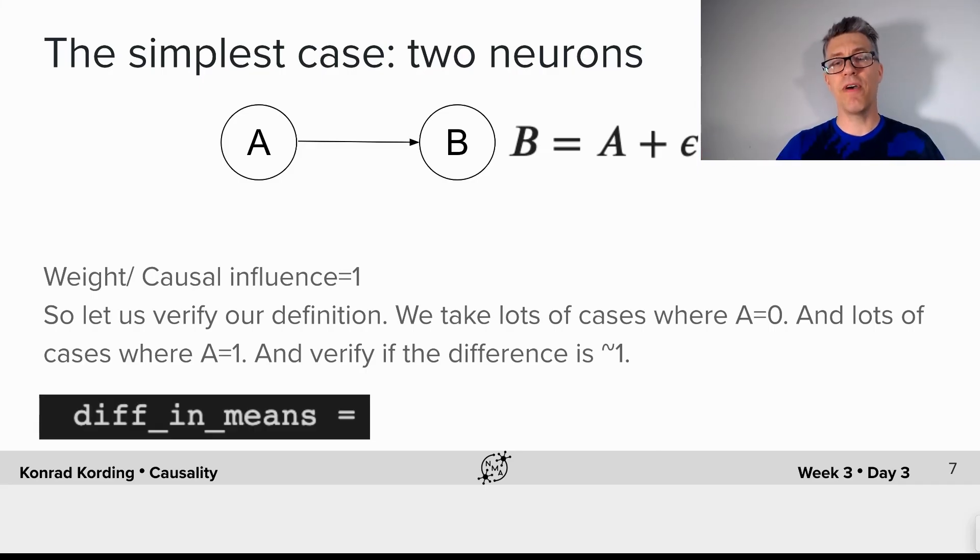So, let's verify our definition. We take lots of cases where A is 0 and lots of cases where A is 1 and then we verify if the average difference between those two cases for B is 1. So, it's now your turn to calculate the difference in means between these two.